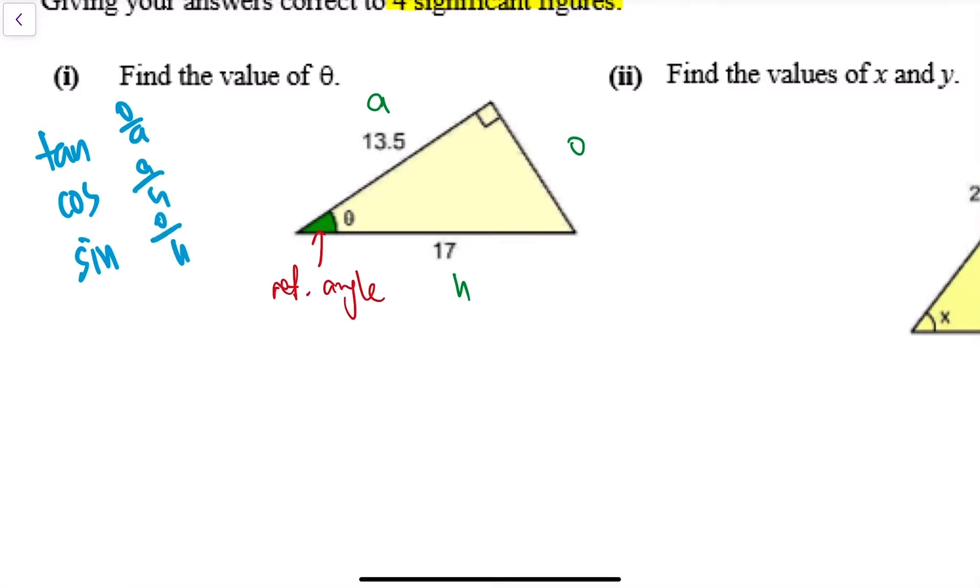So now which one should I use? I have A, I have H, so I decided to use cosine. Cosine theta equals 13.5 over 17.